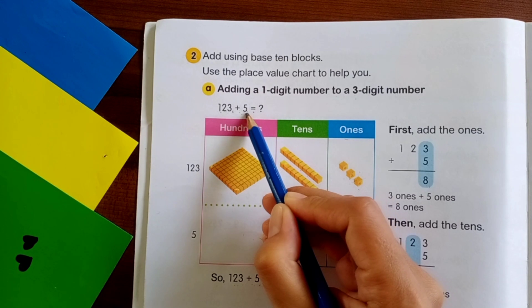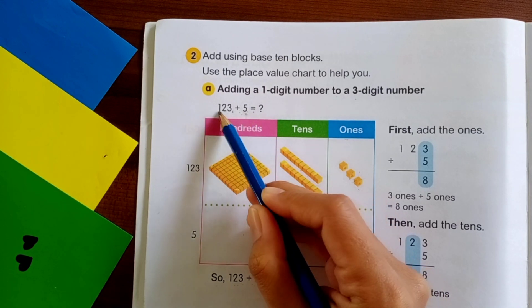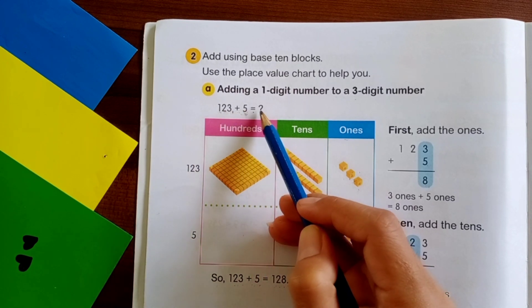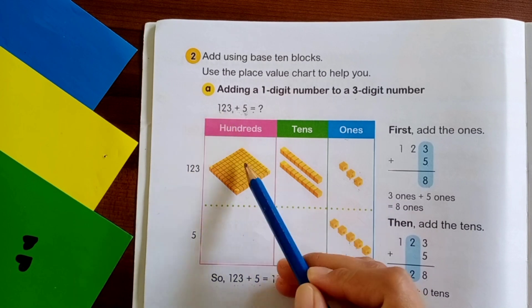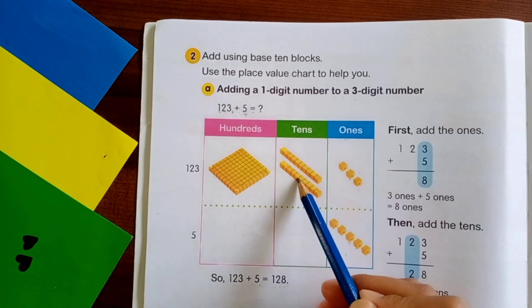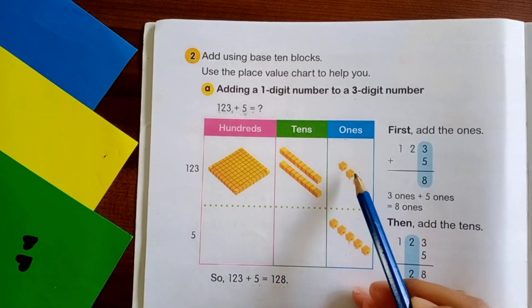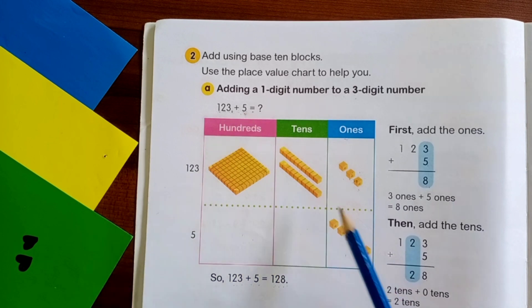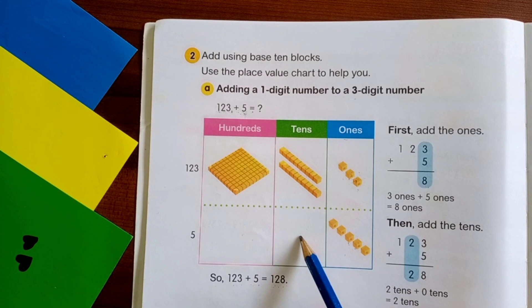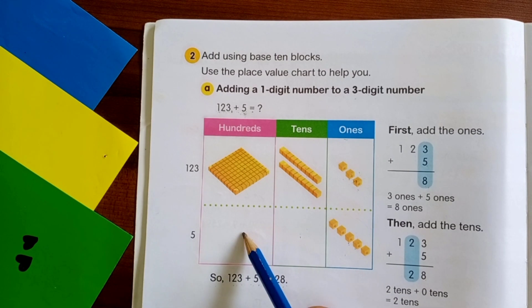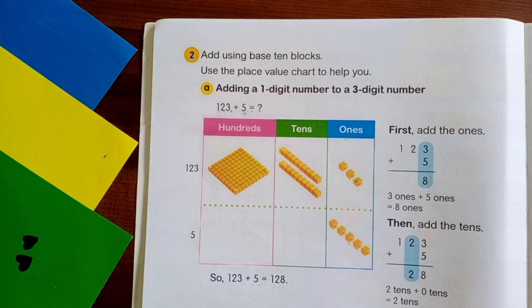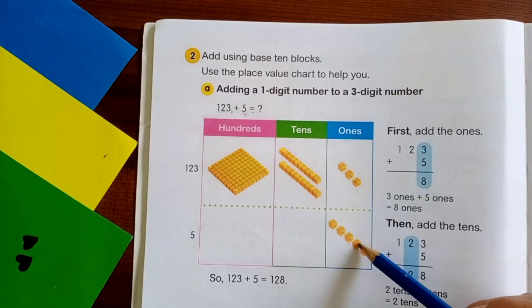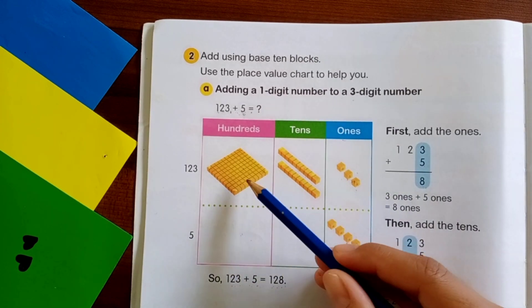Let's start by adding one digit number to three digit number. 123 plus five. One is hundreds, two is tens, three is ones. Five is ones also, so we put it in ones. There is no tens, there is no hundreds. Remember students, when we add numbers, start from ones. Ones with ones, tens with tens, hundreds with hundreds.